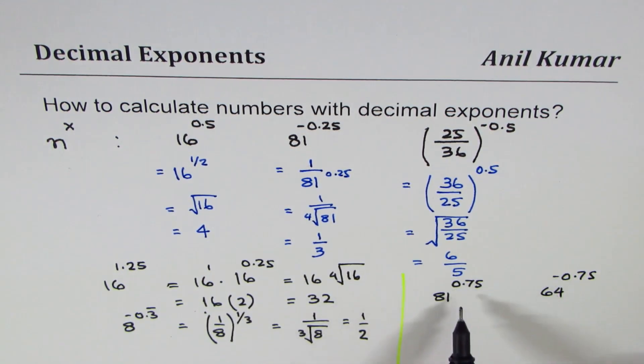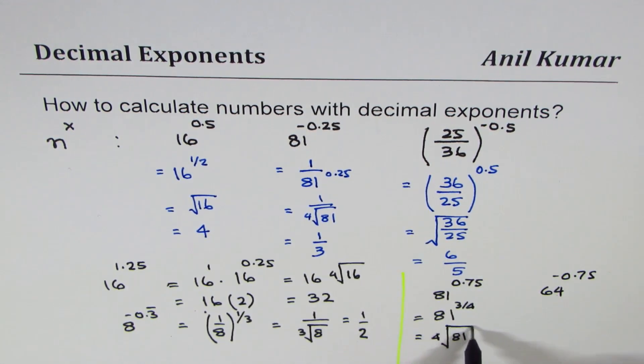Now how are you going to solve this? Or we could take 64 to the power of minus 0.75. You can test your skills with these numbers. Let me do 81 to the power of 0.75. 0.75 means 3 over 4, so we write this as 81 to the power of 3 over 4.